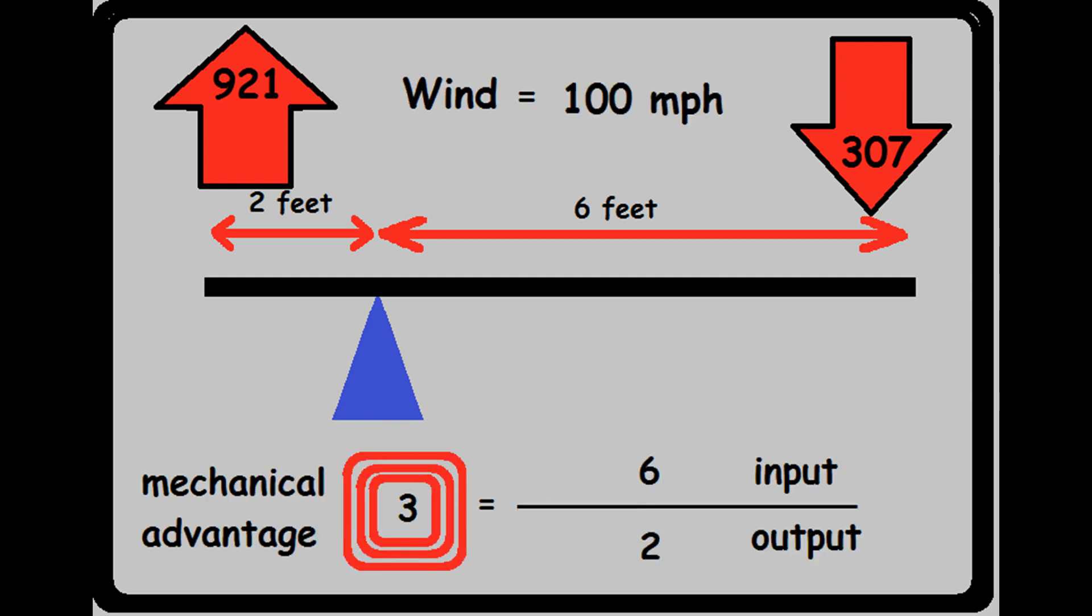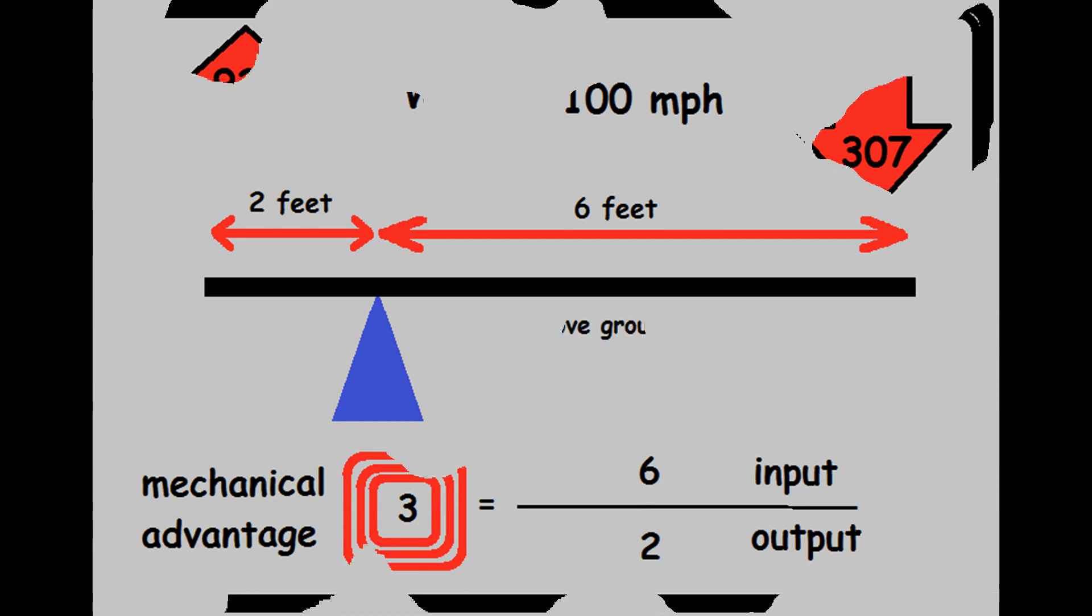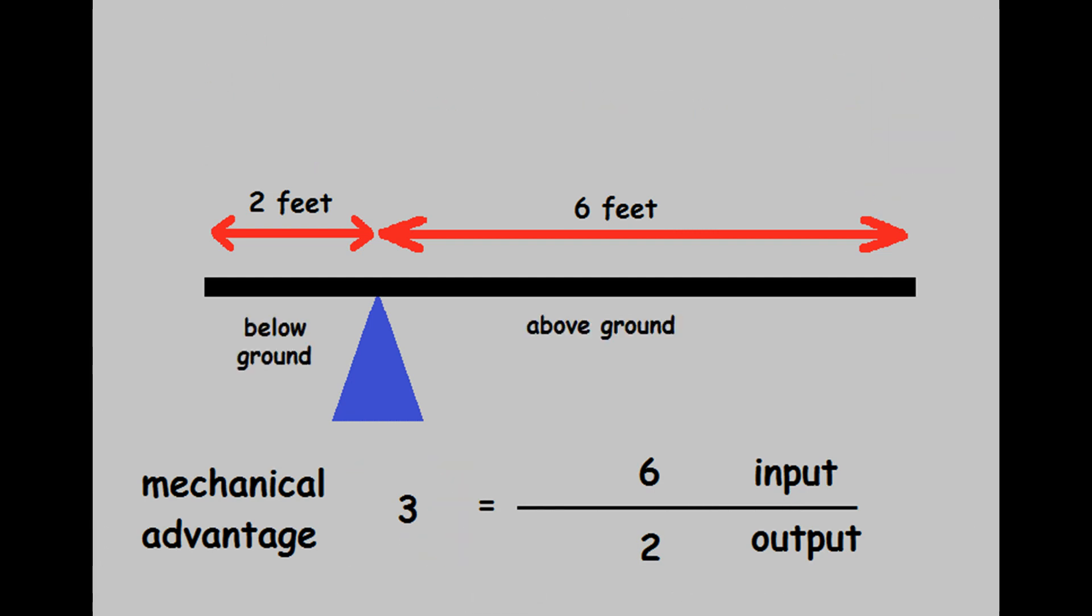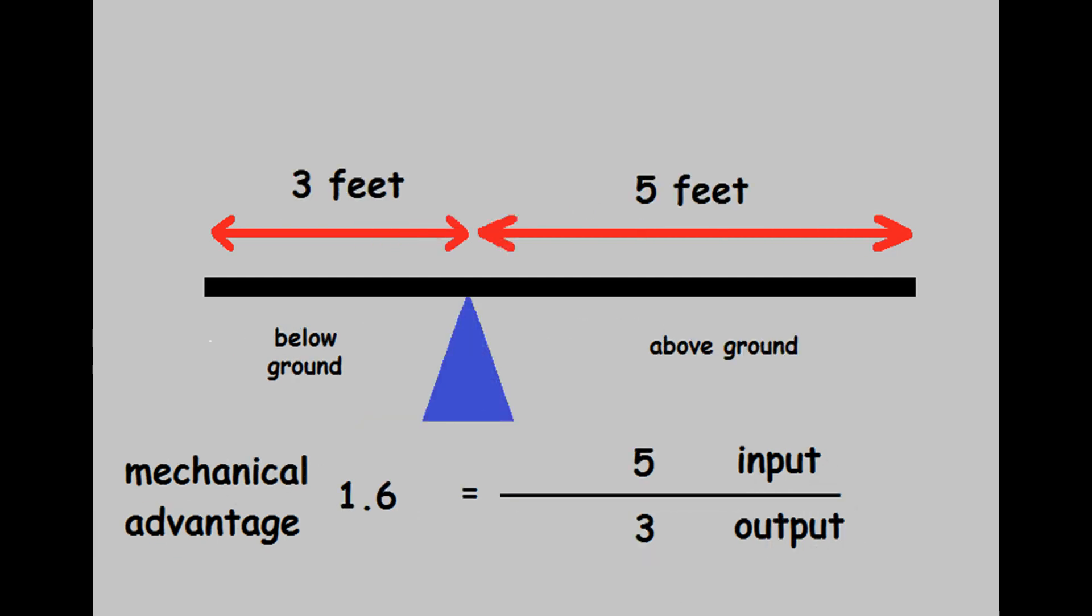Now that we know about class 1 levers, we know the real problem is this mechanical advantage of 3. We also now know how to change that mechanical advantage. Change the length of the input and output arms from 2 and 6 feet over to 3 and 5 feet. This will reduce the mechanical advantage to 1.6. This can be accomplished by putting your 8-foot post 1 additional foot into the ground.